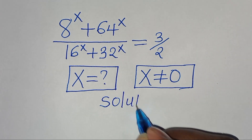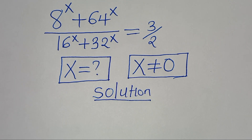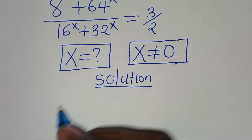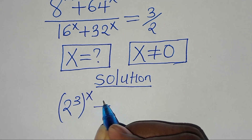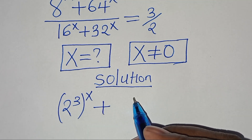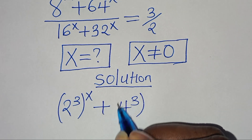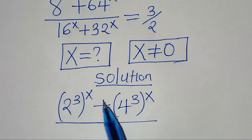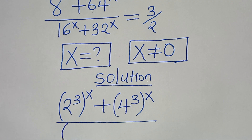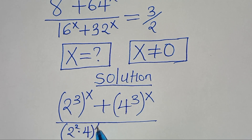Let's provide a solution. We can express 8 to the power of x as 2 to the power of 3, then raised to the power of x. Then plus 64 to the power of x, which we can express as 4 to the power of 3, then raised to the power of x. Divided by 16 to the power of x, we can express this as 4, which is 2 to the power of 2, multiplied by 4 raised to the power of x.